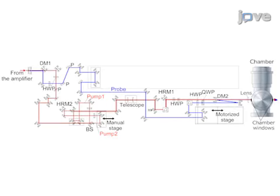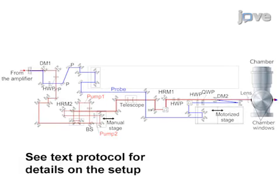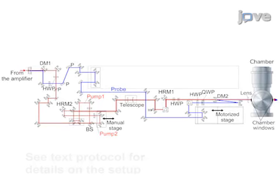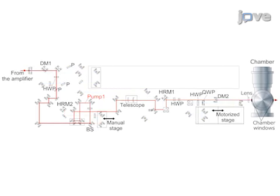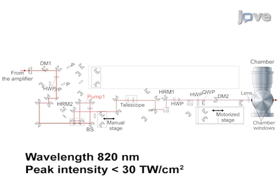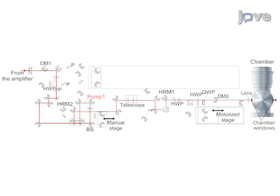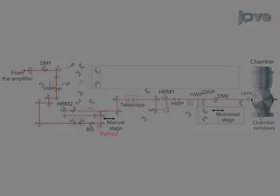The second component is the pump probe optical setup. As depicted in the schematic, the setup employs a titanium sapphire laser amplifier to create three co-linear femtosecond pulses. The first pulse is linearly polarized with a center wavelength of 820 nanometers and is for molecular alignment. The second pulse is for direction control.